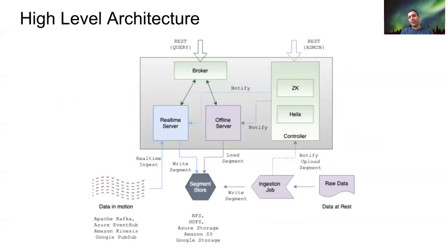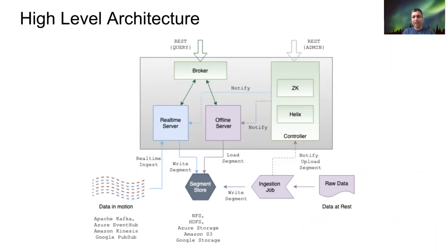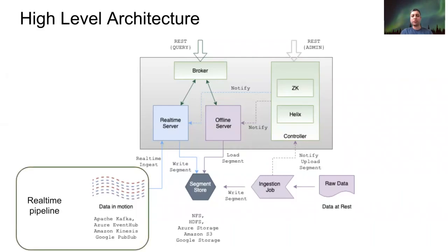Now that all the buzzwords are out of the way, let's get our hands dirty and see how Pinot looks like under the hood. Here's a high level architecture of Pinot. At the bottom of the diagram, you can see the data sources where we get the raw data from. You can use Pinot as part of your real-time pipelines, where the data flows in through either Kafka, Kinesis, Pub/Sub, and so on. In this case, Pinot will be ingesting the data one event at a time.